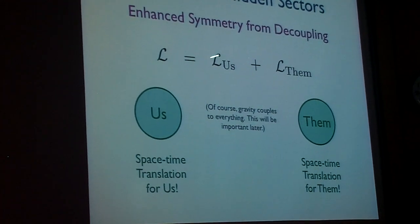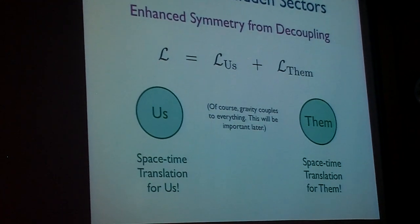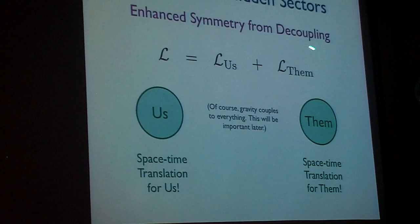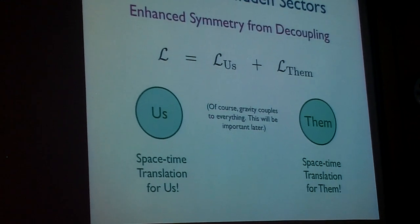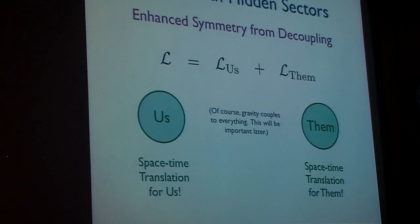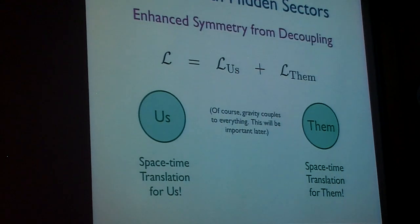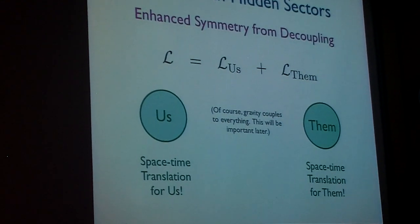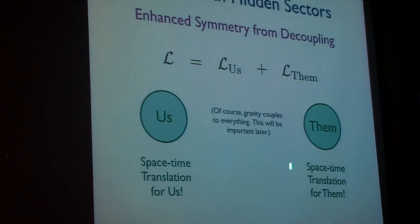But if the Lagrangian takes a form where the fields and interactions of the standard model are just completely decoupled from the fields and interactions in some completely hidden sectors in a completely parallel universe, then apart from gravitational interactions, which will couple these all together, we have an enhanced space-time symmetry.